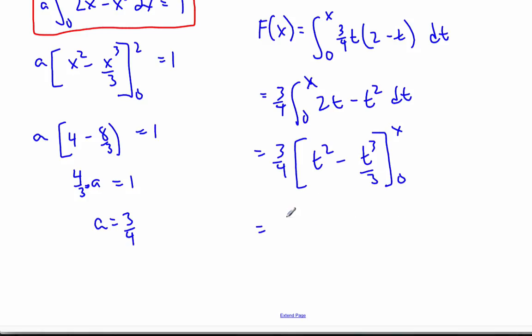Plug in my values in, I get 3 quarters, X squared minus X cubed over 3. Plug the 0 in, that cancels away. And so I get 3 quarters, X squared minus X cubed over 4. And this is the cumulative distribution function of X.